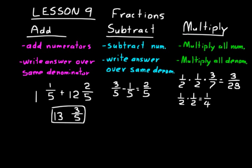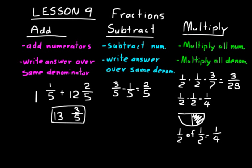One way to think about it is to use fraction circles. Half times a half means we're splitting a half, half of a time, which gives us one-fourth. Another way is to use the word 'of' instead of the times symbol: half of half. If you start with a half and split that in half, you end up with one-fourth.